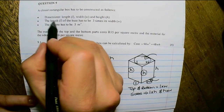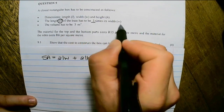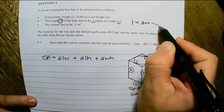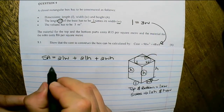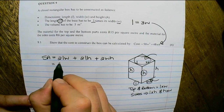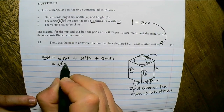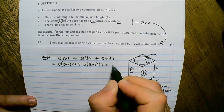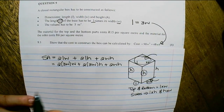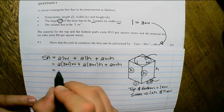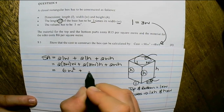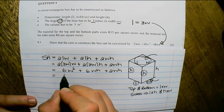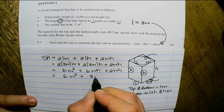It was given that the length of the base is 3 times the width, so length equals 3 times width. Since the cost formula has no lengths in it, I'll replace all lengths with 3 times width. That gives 2(3w)(w) + 2(3w)(h) + 2wh, which simplifies to 6w² + 6wh + 2wh, and further to 6w² + 8wh.